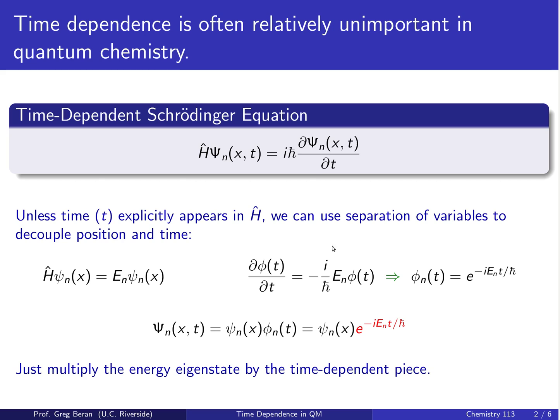Ĥψ equals Eψ, and this time-dependent piece, which has a straightforward solution: φ(t) equals e to the minus i times the energy times t over h-bar. Most of the time in chemistry, time does not appear as a variable in the Hamiltonian, so usually we can do this.